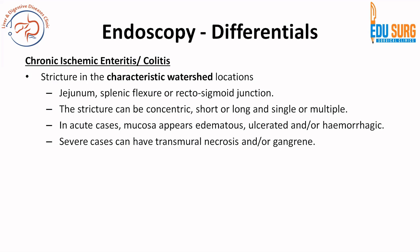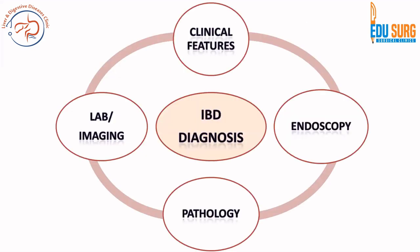Ischemic enteritis or colitis: the watershed locations will have stricture. Watershed locations in the small bowel are the jejunum; in the large bowel, the splenic flexure and rectosigmoid junction. Strictures can be concentric, short or long, and single or multiple. In acute cases, you can have edema, ulceration, and hemorrhage; severe cases can have pneumatosis, transmural necrosis, and gangrene.